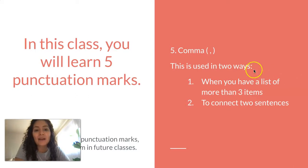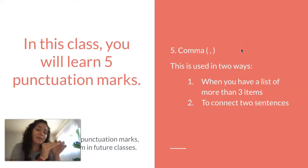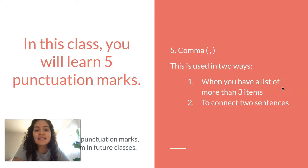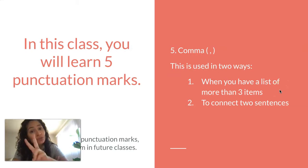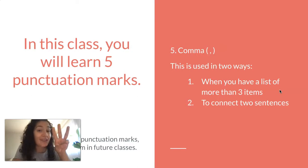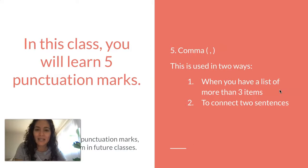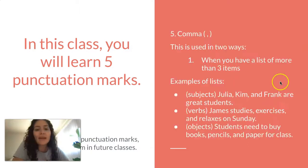The last punctuation mark we're going to study is the comma. The comma looks similar to the apostrophe, but the apostrophe is up and the comma is on the bottom. The comma has two ways to be used. The first is when you have a list of more than two items — if you have two you don't need a comma, but if you have three or more you need a comma. The second way is to connect two complete sentences.